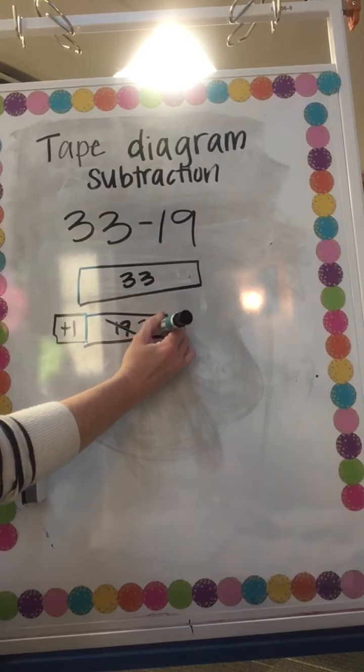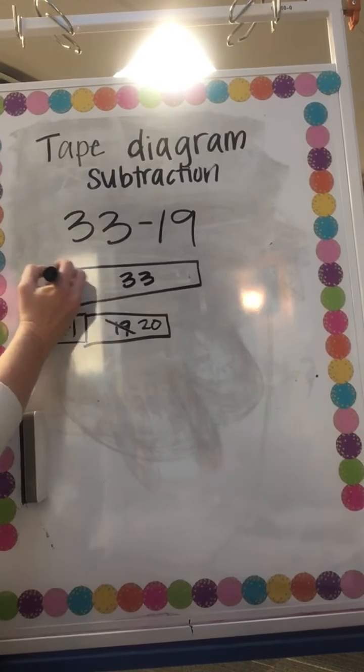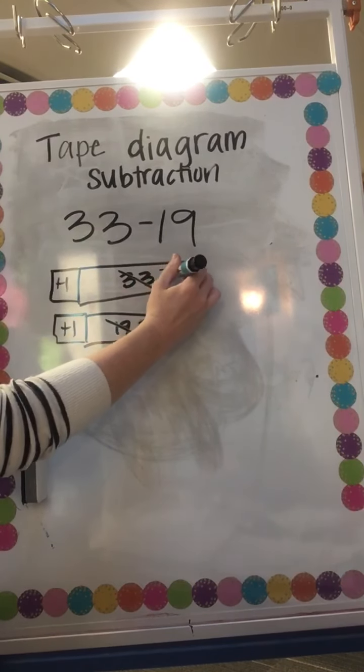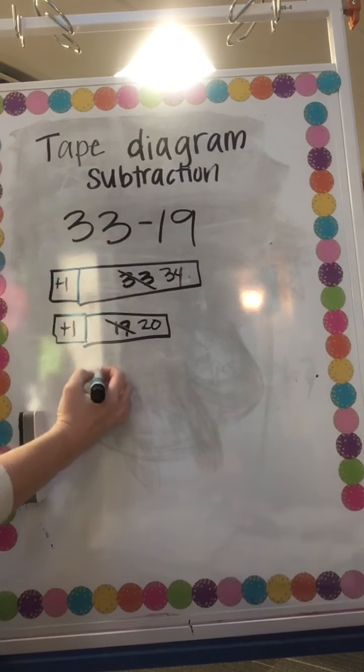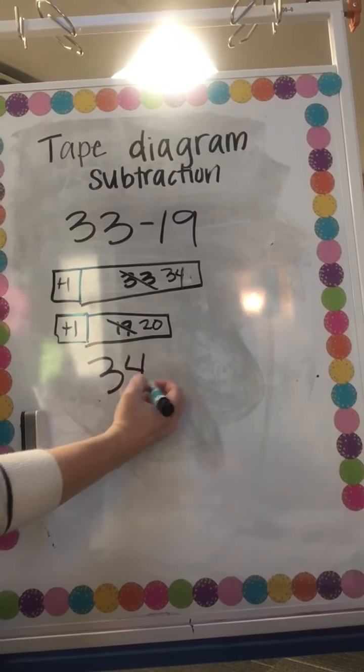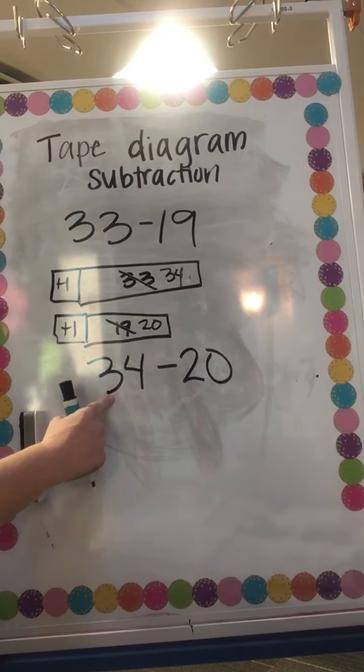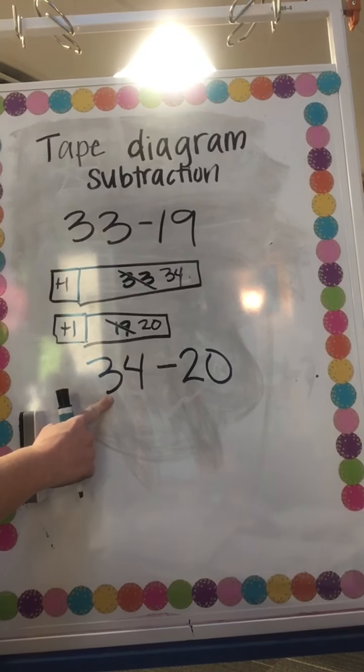And then this one's one away from a landmark number so what I have to do here I'm gonna add that to make it 20, and then I'm gonna add one here to make it 34. So now my new equation is 34 minus 20.